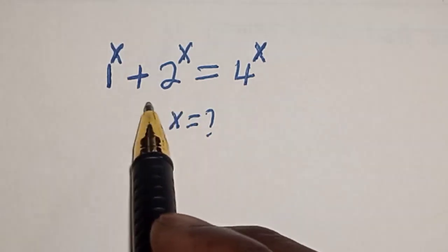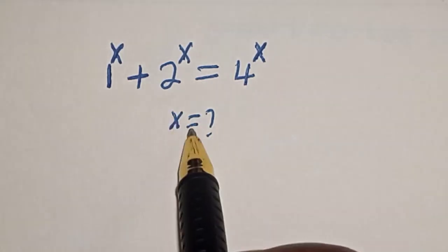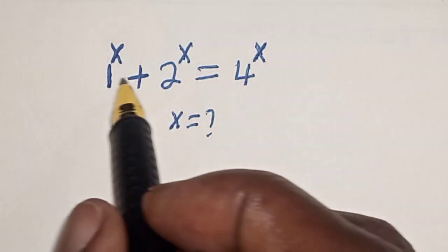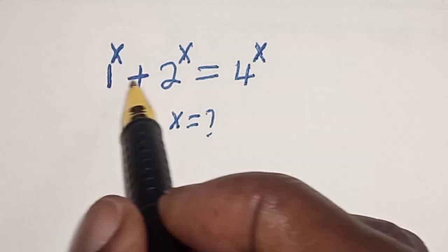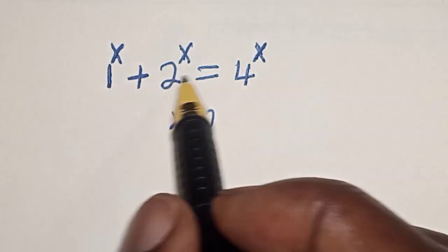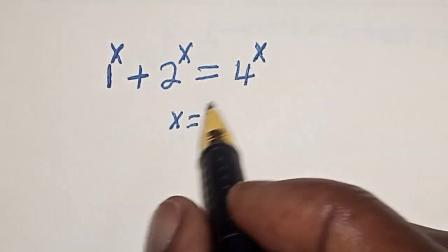Hello, welcome to Magis. In this class we want to find the value of s from this equation: 1 raised to the power s plus 2 raised to the power s is equal to 4 raised to the power s.